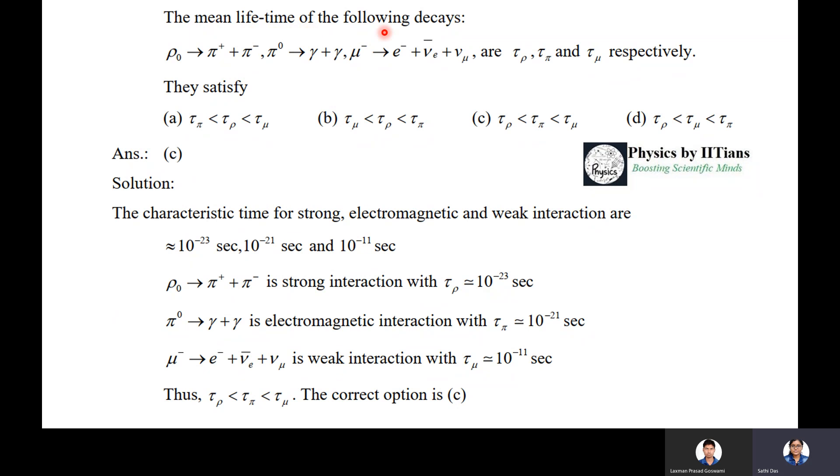The next question, and this is the last question. The mean lifetime of the following indicates: rho⁰ goes to π+ plus π-, π⁰ goes to gamma plus gamma, mu- goes to electron plus antineutrino plus muon neutrino. These are the lifetimes for rho is τ_rho, pi is τ_pi, and mu is τ_mu respectively. Which one will be correct from this option?